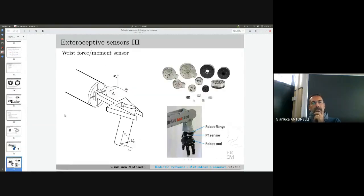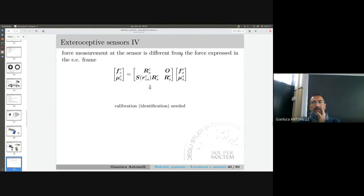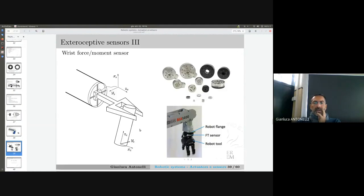Then we can mount the force-moment sensor at the end effector. This is a picture with several such devices. You buy them by considering the range of forces you want to measure, the signal-to-noise ratio, the acquisition frequency - all data that play a very important role. You should notice that, for example here, I am exchanging the force with the environment here, but my force-torque sensor is mounted here. Thus, I need the transformation that we saw yesterday.